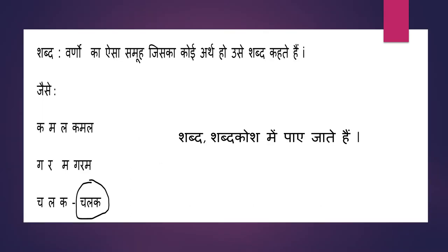What is Shabd, or word? Varno ka aisa samoha jiska koi arth ho usay Shabd kehte hain. It is a collection of such letters which has a definite meaning. For example, the letters ka, ma, la — when they come together, they form the word kamal, which means lotus. Since kamal has a definite meaning, it is known as a word. Ga ra ma — garam — means hot, so garam is a word. Now if you look at the word chalak, these letters come together to form chalak, but it does not have any meaning, so chalak is not a word.